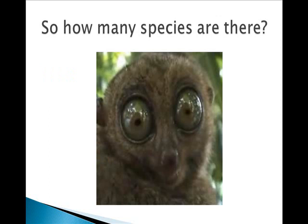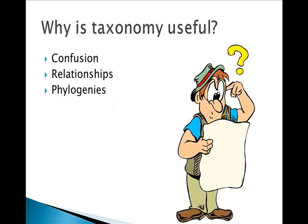So the question is: how many species are there on the planet? Scientists currently estimate that there are over 10 million plus species worldwide, and over 5 million of these live in the tropics alone. Most of the unnamed species are either very small or microscopic, although occasionally we do find big ones. Taxonomy helps to prevent confusion among scientists, helps show how organisms are related, and can help reconstruct phylogenies, which are the evolutionary histories of an organism or group.